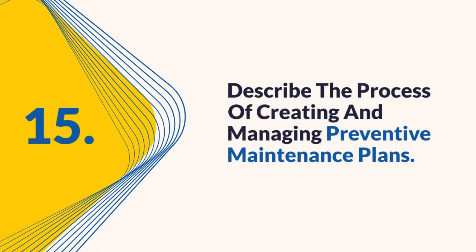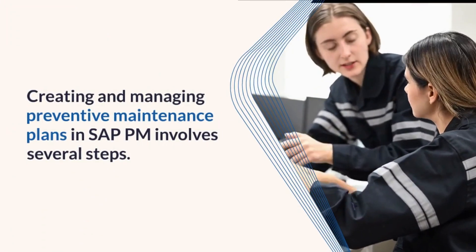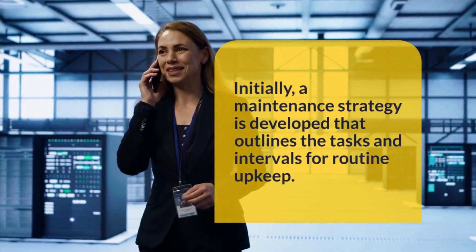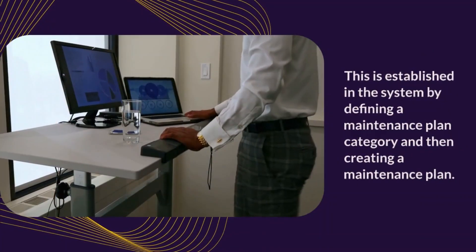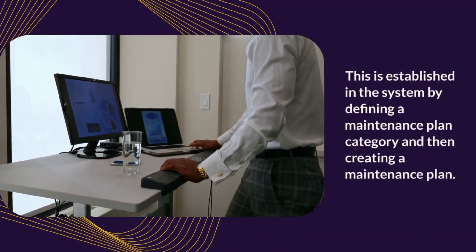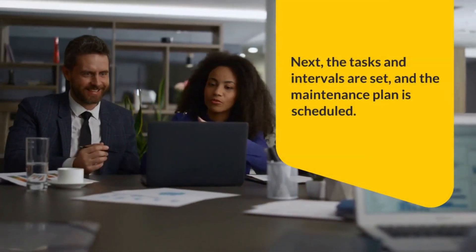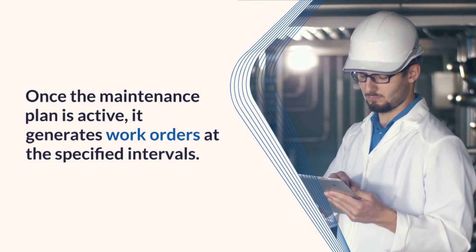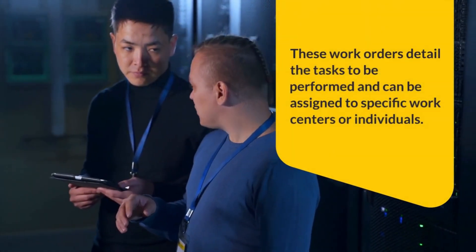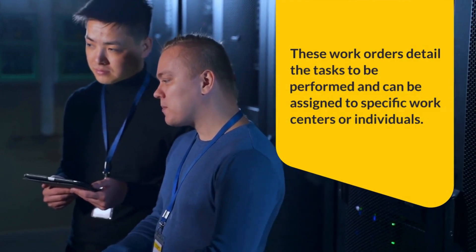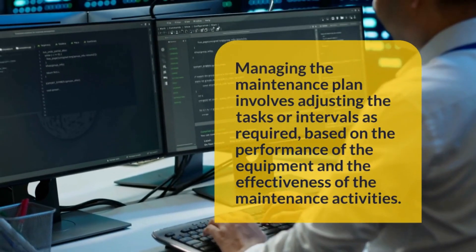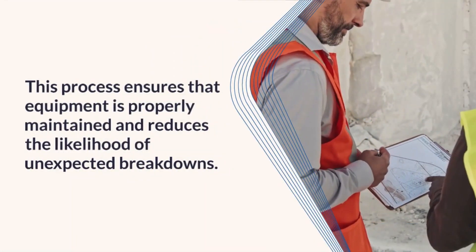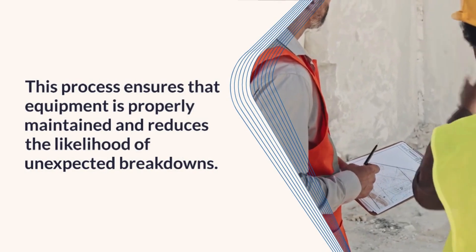Question 15: Describe the process of creating and managing preventive maintenance plans. Creating and managing preventive maintenance plans in SAP PM involves several steps. Initially, a maintenance strategy is developed outlining tasks and intervals for routine upkeep, established in the system by defining a maintenance plan category and creating a maintenance plan. Next, tasks and intervals are set and the plan is scheduled. Once active, it generates work orders at specified intervals, detailing tasks to be performed and assigning them to specific work centers or individuals. Managing the plan involves adjusting tasks or intervals based on equipment performance.